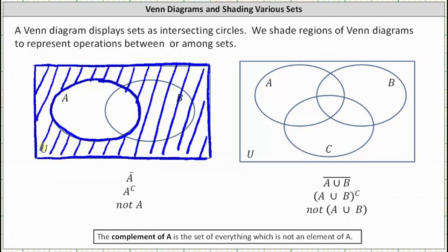And now for the second example, we have the complement of A union B, which can be expressed in either of these two ways, which we can think of as not A union B.